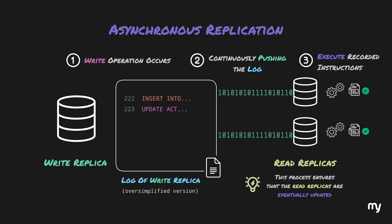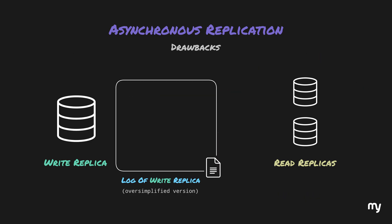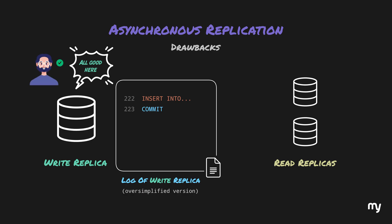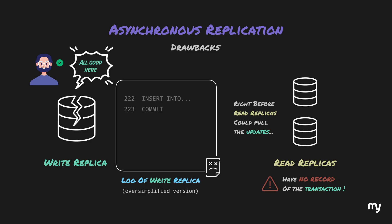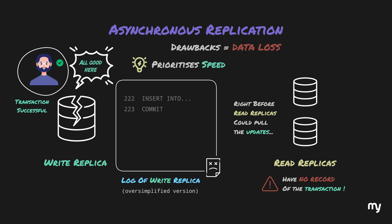This might sound smooth and efficient, but it comes with a critical drawback. Imagine that the primary database writes an insert statement and its corresponding commit instruction to the log, signaling that the transaction is successful. The user sees their operation as completed — but right before the read replicas can pull and process these updates, the primary database crashes. In this case, the secondary replicas have no record of the transaction because they hadn't pulled the new log entries. While the user believes their transaction was successful, the data has actually been lost. Asynchronous replication prioritizes speed but sacrifices consistency in the event of a primary failure.